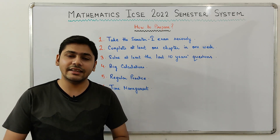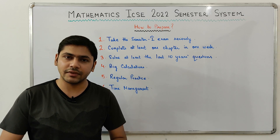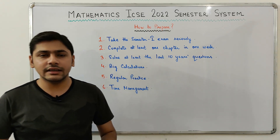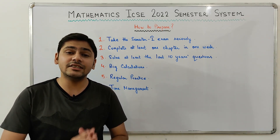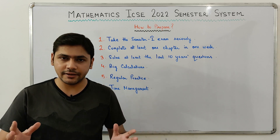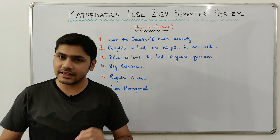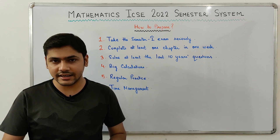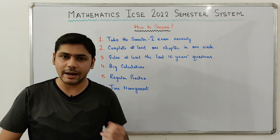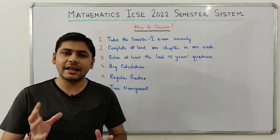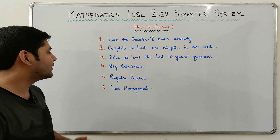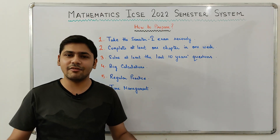The next point: complete at least one chapter in one week. We are now in August and the examination will be held in November, so you have about three to three and a half months for preparation. In one week, try to complete one entire chapter — go through the chapter, solve the example section, solve the exercise section, and try to solve at least the last 10 years of questions for that chapter.